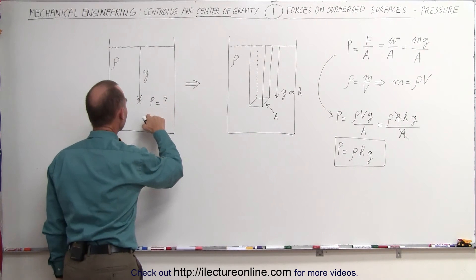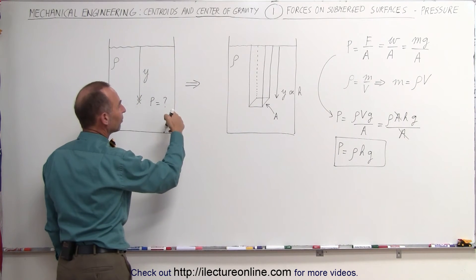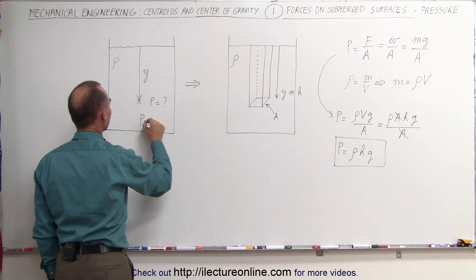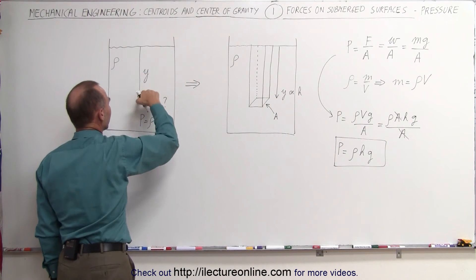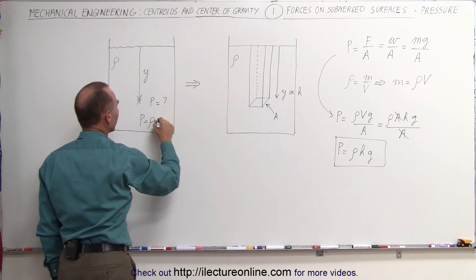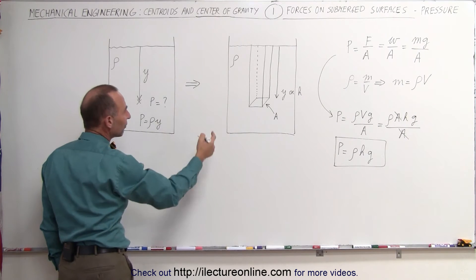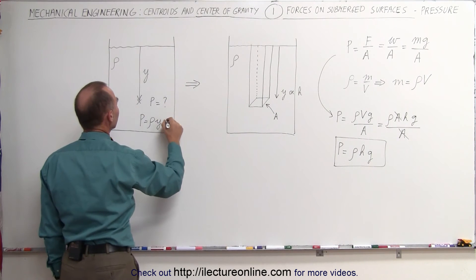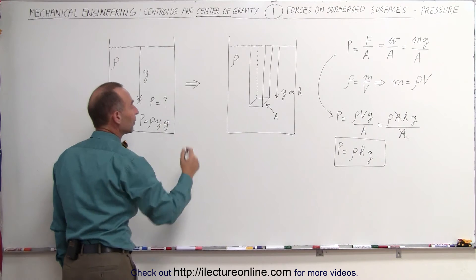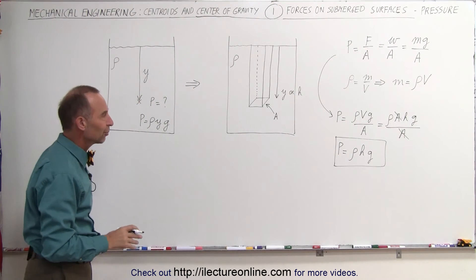So here we can go back. The pressure at this location depends upon the density, the depth in the water or in the fluid. In this case we use the variable y instead of h, it doesn't matter. And then the acceleration due to gravity, assuming somewhere on the earth, it's about 9.8 meters per second squared.